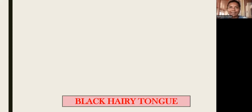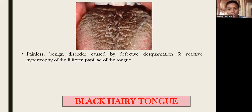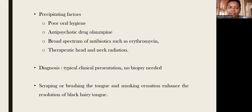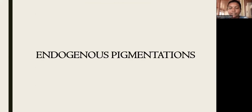Black hairy tongue is a benign disorder caused by defective desquamation and reactive hypertrophy of the filiform papillae. The filiform papillae will be enlarged and black in color, showing various colors from yellow-brown to black depending on extrinsic and intrinsic factors. Precipitating factors include poor oral hygiene, antipsychotic drugs like olanzapine, broad-spectrum antibiotics such as erythromycin, and therapeutic head and neck radiation. Diagnosis is by clinical presentation, and resolution is aided by tongue brushing and smoking cessation.